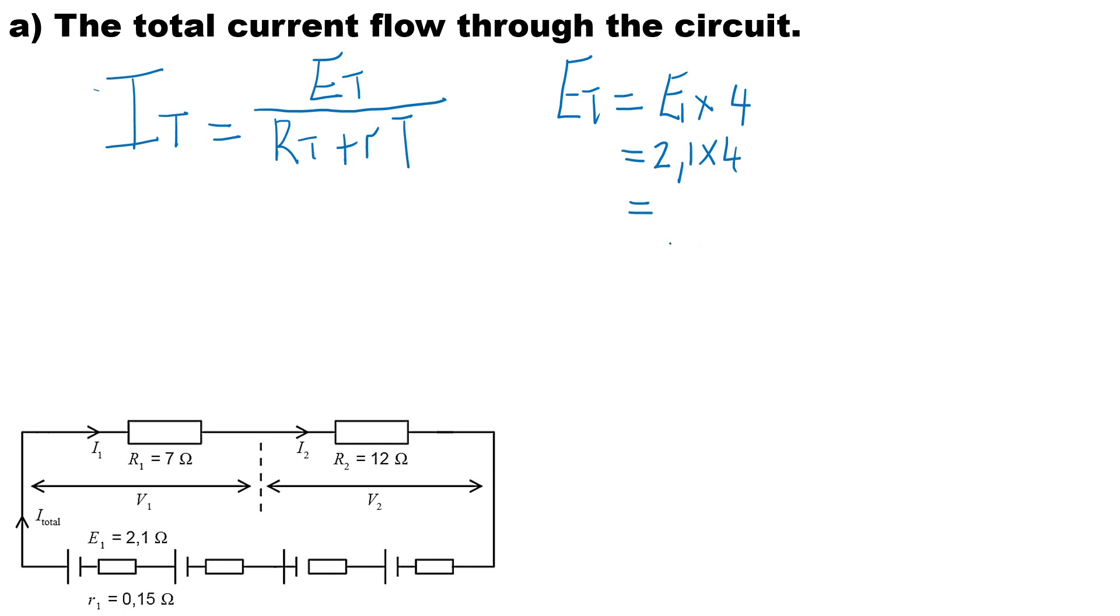We also need to calculate the external resistance. The external resistance equals R1 + R2 because they're connected in series. So that's 7 + 12, giving us an external resistance of 19 ohms.